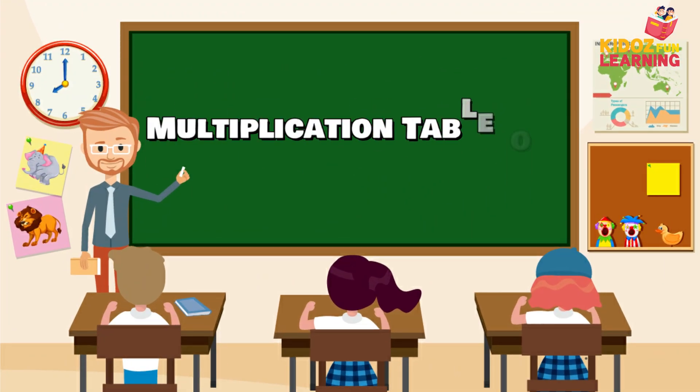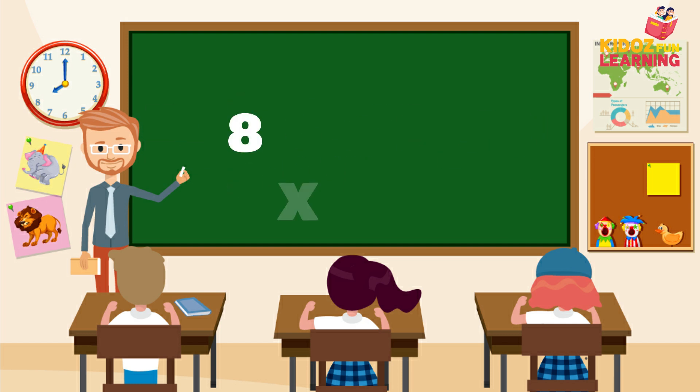Multiplication table of 8: 8 ones are 8, 8 twos are 16, 8 threes are 24, 8 fours are 32.